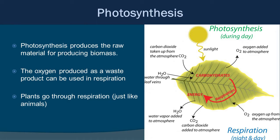Photosynthesis produces the raw materials for producing biomass, and oxygen is produced as a waste product and can be used in respiration. Plants do go through cellular respiration, just like animals do. In this diagram to the right, you'll see a leaf as an icon with a photosynthesis side during the day and a respiration side. Carbon dioxide is taken in from the atmosphere, water through the leaf veins, and sunlight is added in, producing oxygen as a waste product and carbohydrates through photosynthesis. Cellular respiration then releases water and carbon dioxide, and the leaf also takes up oxygen.